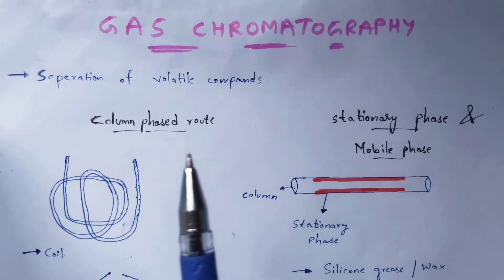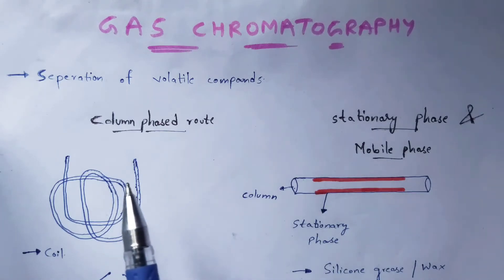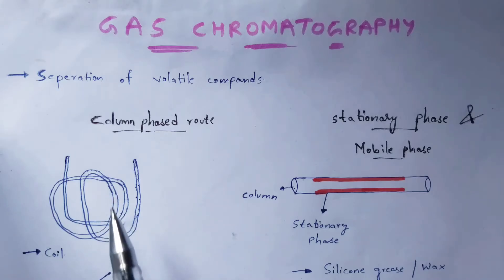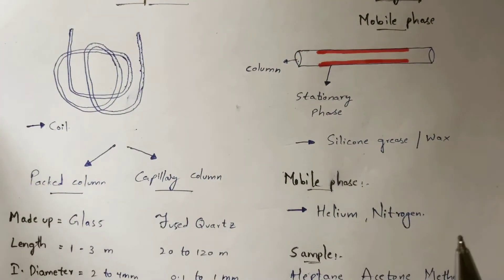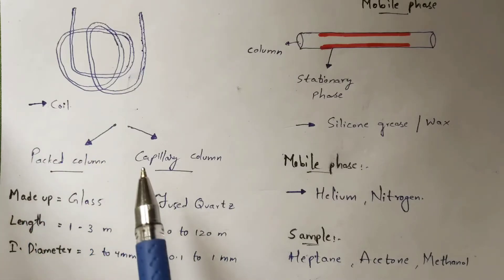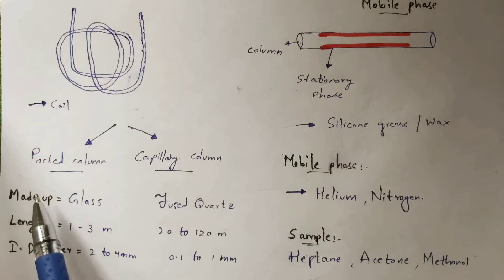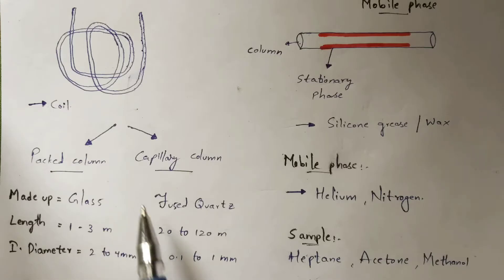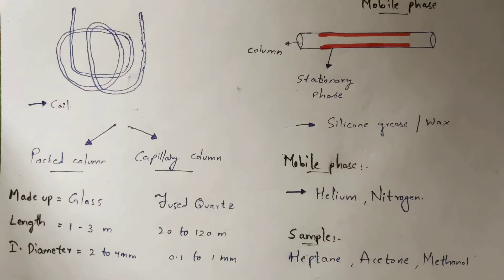Let us discuss the apparatus and process for gas chromatography. The column used should be a coil-like structure. There are two types of columns: packed column and capillary column. The packed column is made of glass with a length of 1 to 3 meters and an internal diameter of 2 to 4 millimeters. The capillary column is made of fused quartz with a length of 20 to 120 meters and an internal diameter of 0.1 to 1 millimeter.